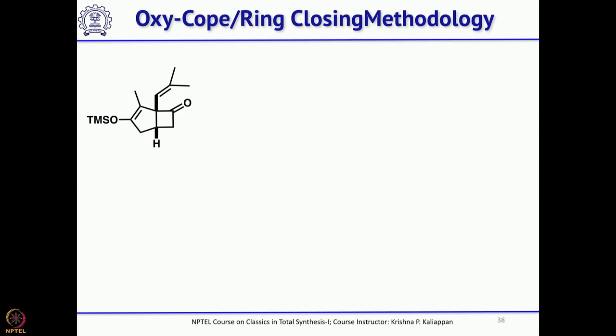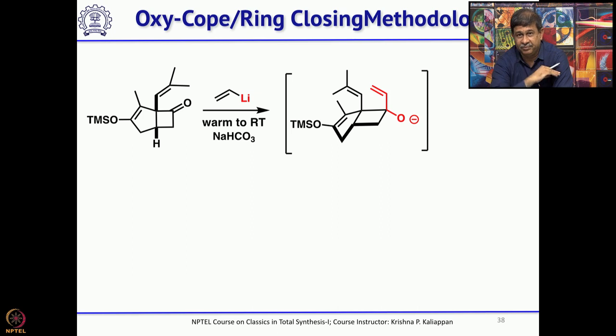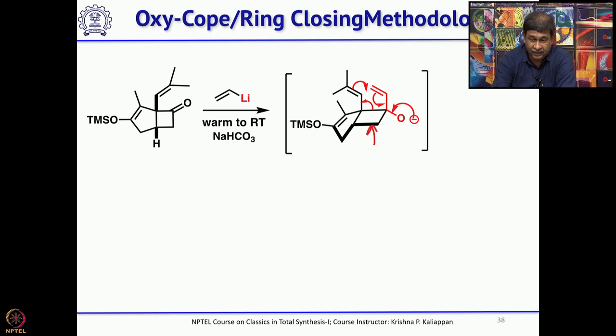There is another very interesting tandem methodology: an oxy-Cope rearrangement followed by a ring-closing step — almost like an oxy-Cope rearrangement followed by an intramolecular Mukaiyama-type aldol reaction — which has been successfully used for the synthesis of triquinanes. For example, this bicyclic compound treated with vinyllithium gives an intermediate that is a classical oxy-Cope intermediate. This will give the corresponding 8-membered ring as the 4-membered ring breaks and a 6-membered ring forms.